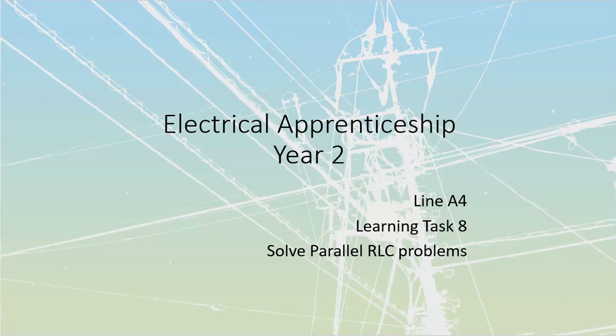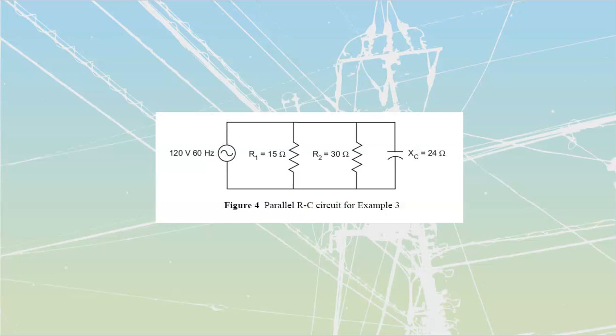All right, line A4, learning task 8. This is going to be video B that we are going to do out of that one. We covered the first section, parallel RL, now we're going to jump into parallel RC. So we're starting over here now at figure number 4, which is going to be my example number 3, and it's an RC circuit.